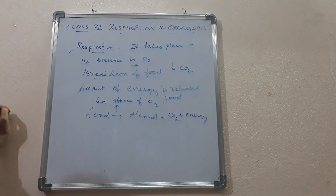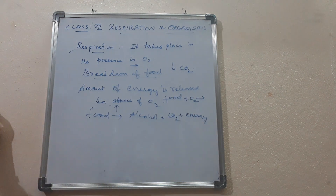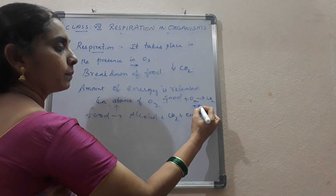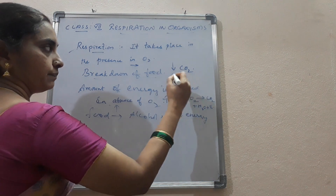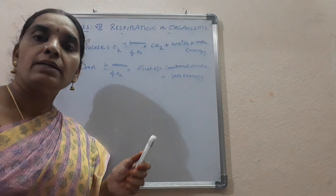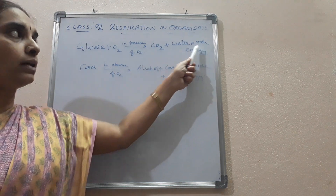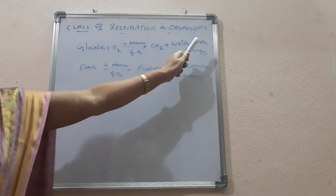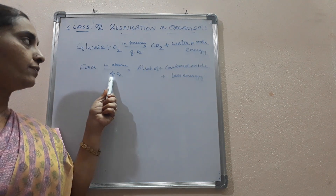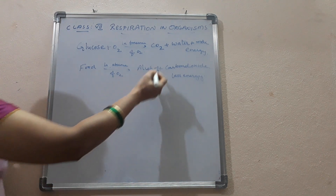In the presence of oxygen, glucose takes in oxygen and gives rise to carbon dioxide, water, and more energy. In the absence of oxygen, food molecules are broken down into alcohol, carbon dioxide, and less energy. So energy is produced in both reactions. In the presence of oxygen, the food molecules are completely broken down into carbon dioxide, water and more energy.